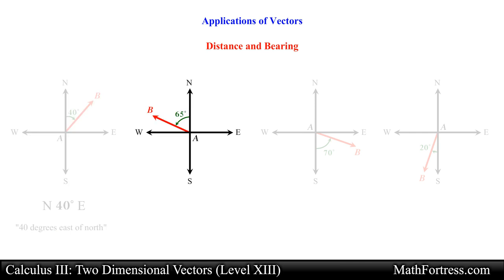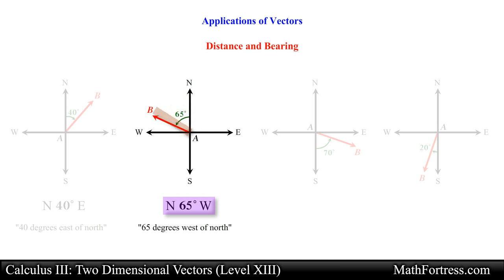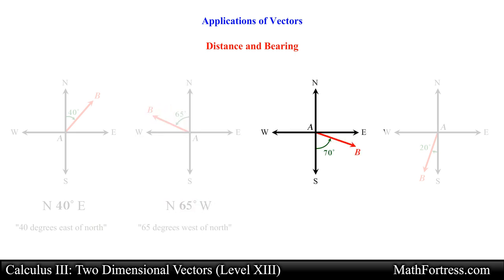The second bearing would be pronounced as 65 degrees west of north. Notice that we start on the line facing north and move towards the west 65 degrees and stop. The third bearing would be denoted as follows.